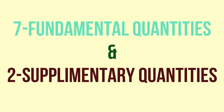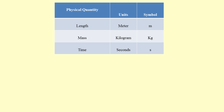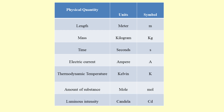Let us discuss all these quantities along with their units and symbols. The seven fundamental quantities are: length, measured in meters (m); mass, measured in kilograms (kg); time, measured in seconds (s); electric current, measured in ampere (A); thermodynamic temperature, measured in kelvin (K); amount of substance, measured in moles (mol); and luminous intensity, measured in candela (cd).